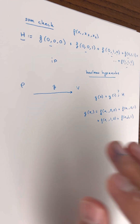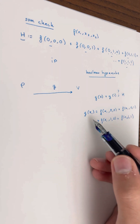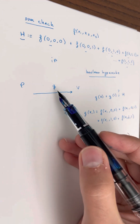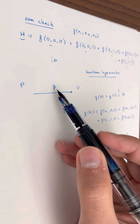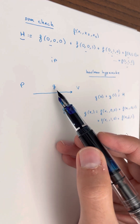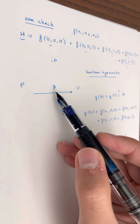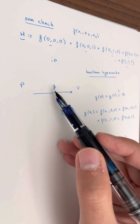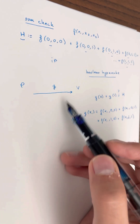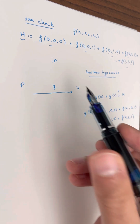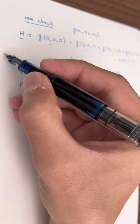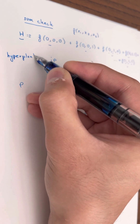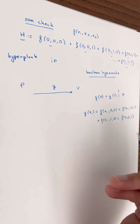At this point in time, the verifier doesn't know if G is correctly formed — G could be any polynomial. The prover sends the polynomial to the verifier. There are optimizations where the prover doesn't have to send the polynomial to the verifier, as discussed in a paper called Hyperplonk, but I'm not going to talk about that here.